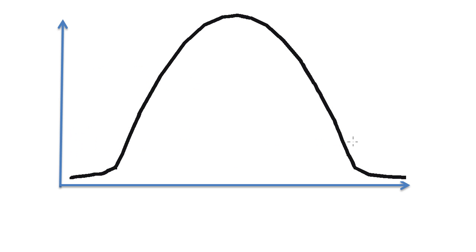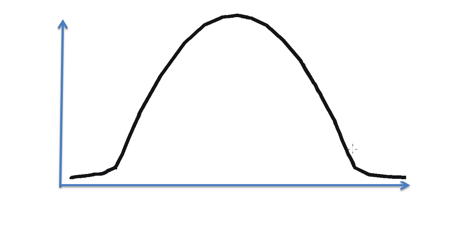And this is the way it works. What a Z-score represents is how far either side of a mean a particular observed value, a particular result in that data set actually is.